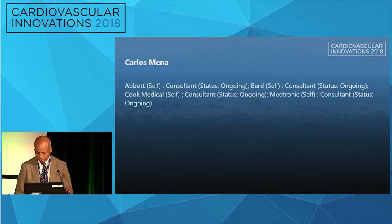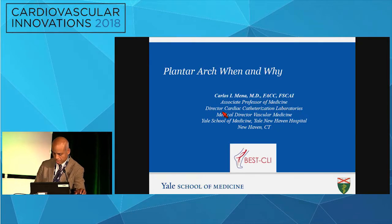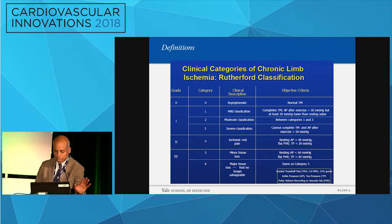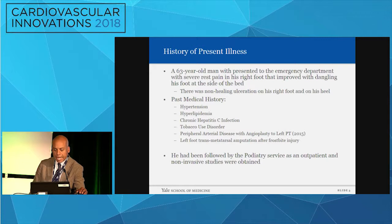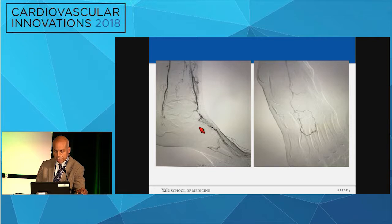Over the next eight minutes I'm going to walk you through what I think should be the reason why we should pursue pedal arch reconstruction and how we should do it. We're going to concentrate in critical limb ischemia - Rutherford 4, 5, and 6. The typical case: 63-year-old gentleman presenting with critical limb ischemia, typical risk factors, seen by podiatry before. Noninvasive testing shows the right leg is a problem, particularly below the ankle. The question is how do I take this patient to a better place.